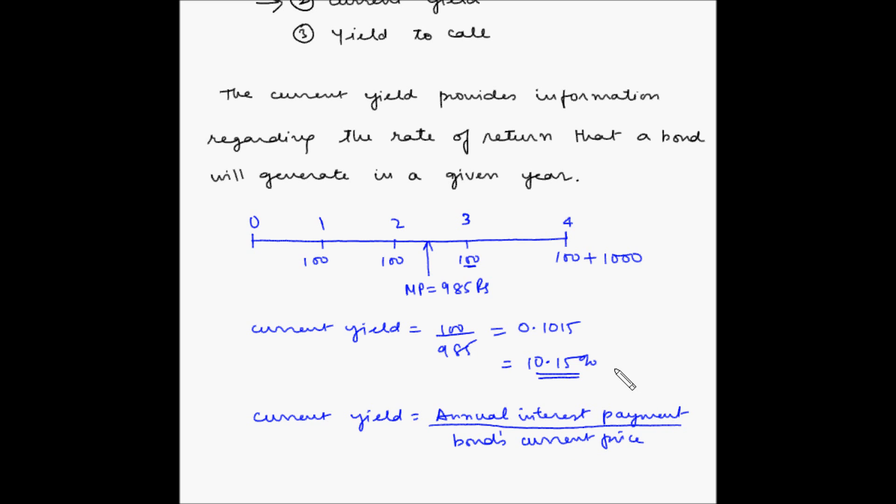As you can notice, the current yield does not take account of the capital gain or loss. Even though the investor is investing 985 rupees, he is getting back the maturity value of 1000 rupees. So actually he is making a capital gain of 15 rupees. But current yield does not consider that. This method does not provide an accurate measure of the bond's total expected return.